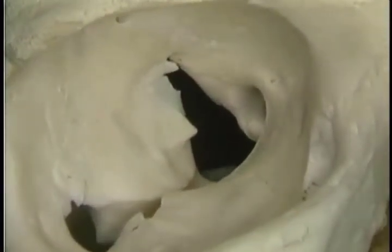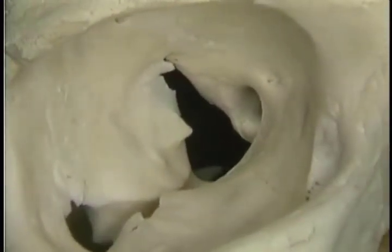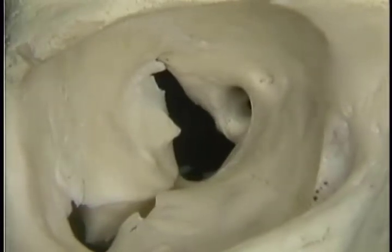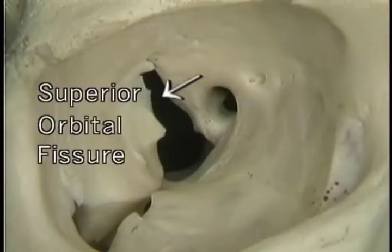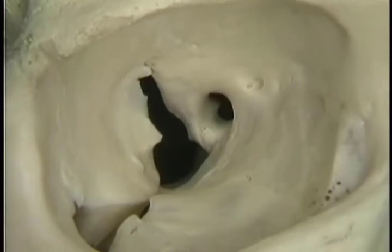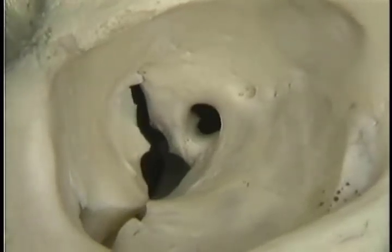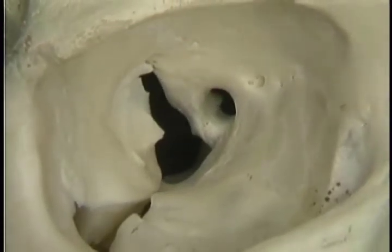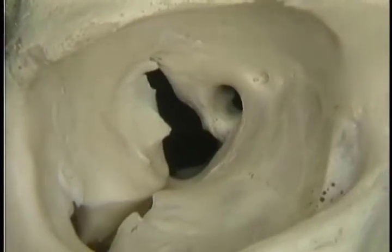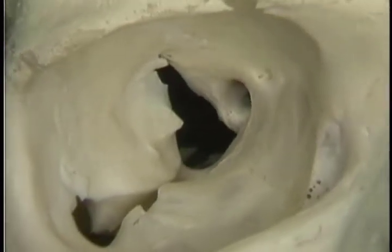Here at the narrow apex of the orbit are the optic canal and the superior orbital fissure. The optic canal transmits the optic nerve and ophthalmic artery. The superior orbital fissure transmits the other nerves that enter the orbit and the superior orbital vein.